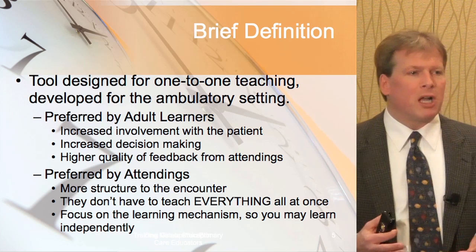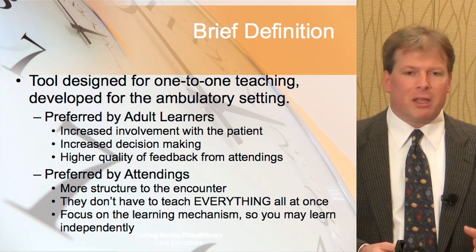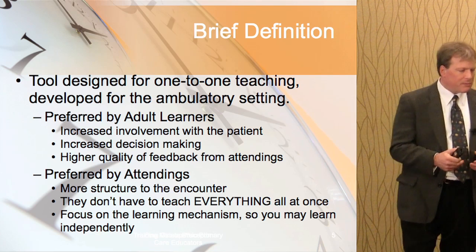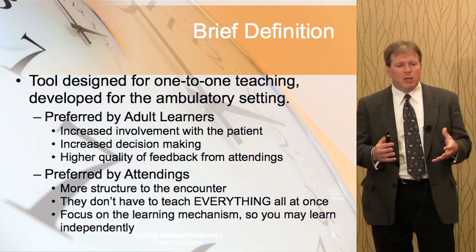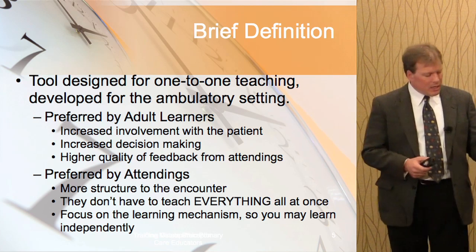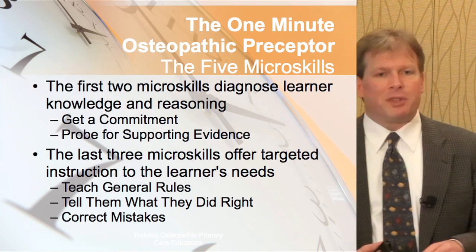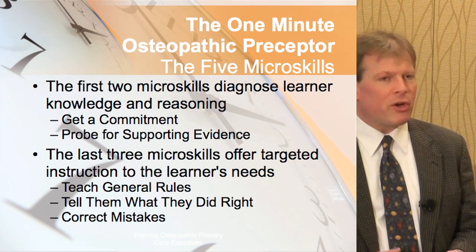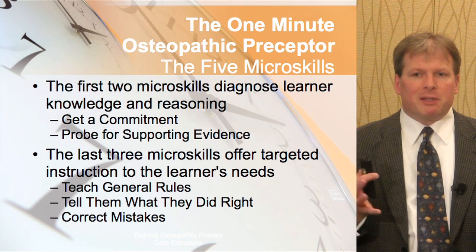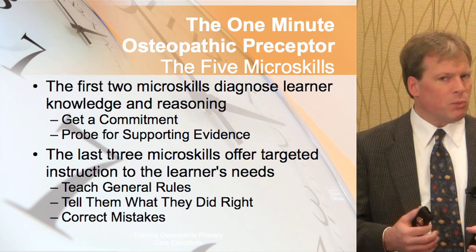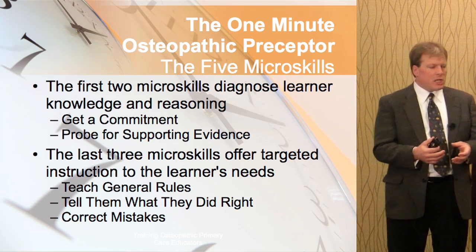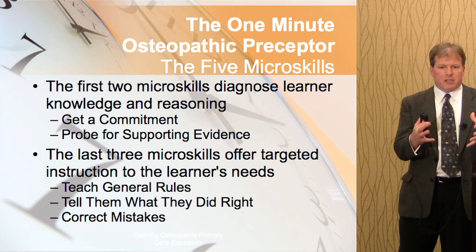This model is not inflexible. You don't have to use every element — you can use some elements and you don't have to go through everything religiously. There are five micro-skills that are very helpful. The first two are focused more on diagnosing the learner: what do they know and how are they thinking? That allows you to go to the next step — the learner's needs.